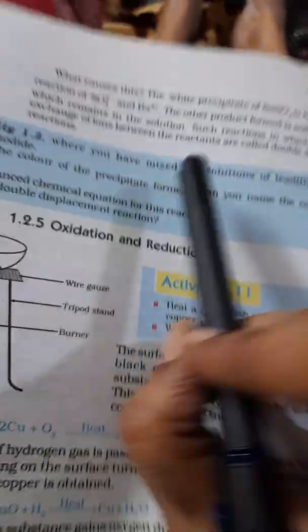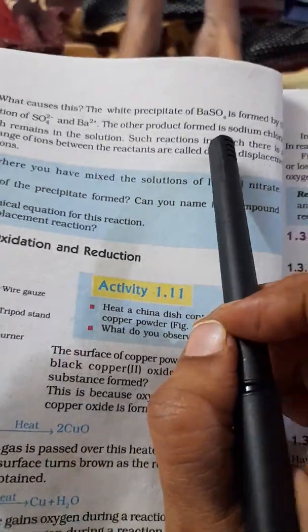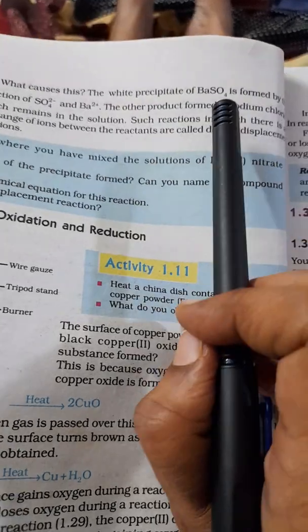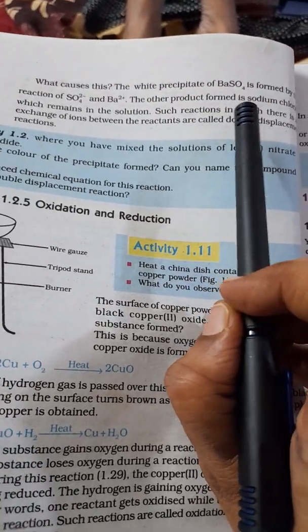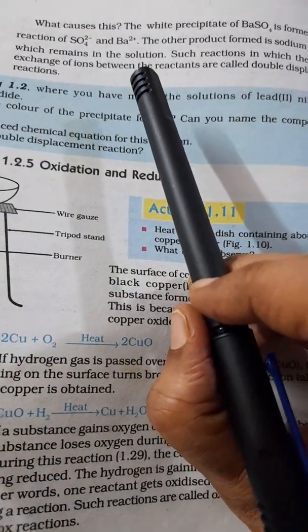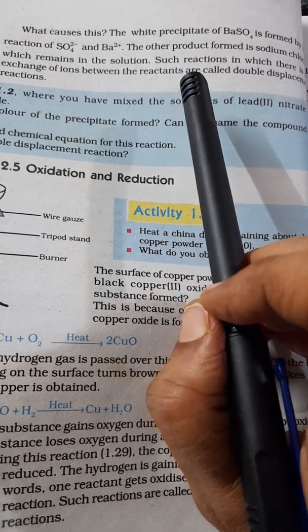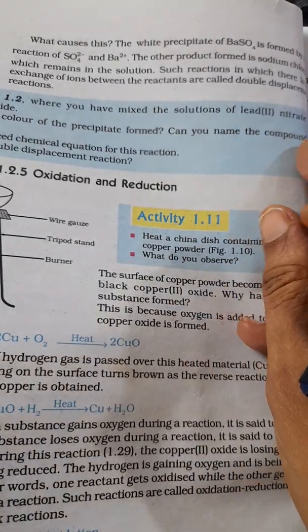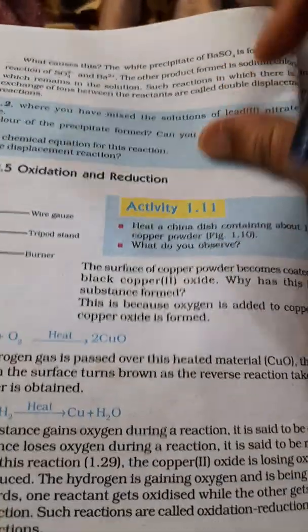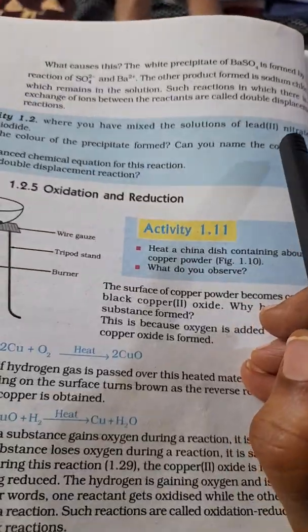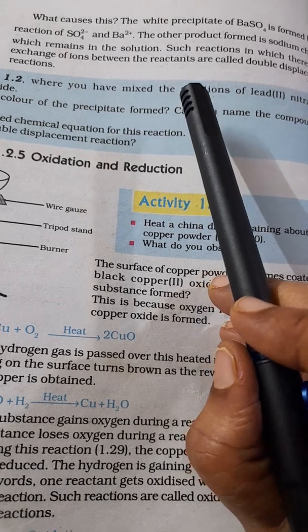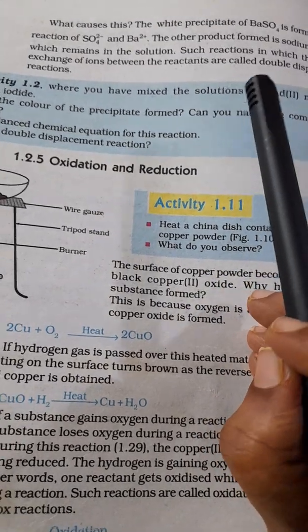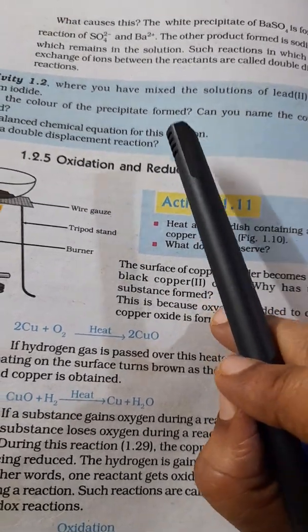What exactly causes this reaction? The white precipitate of barium sulphate is formed by reaction of sulphate ion and barium ion, and the other product formed is sodium chloride which remains in solution. Such reactions in which there is exchange of ions between the reactants are called double displacement reaction.